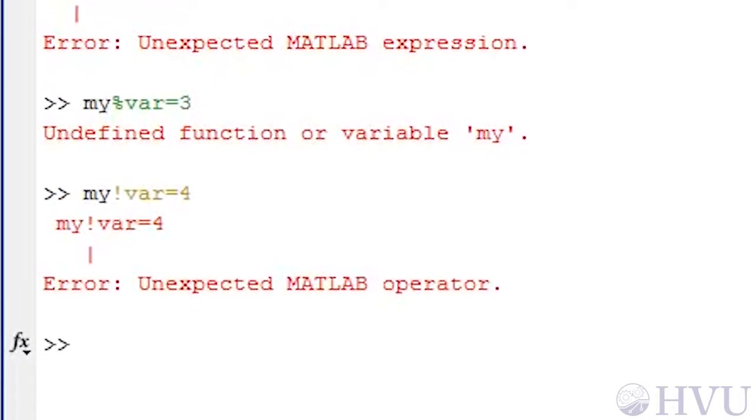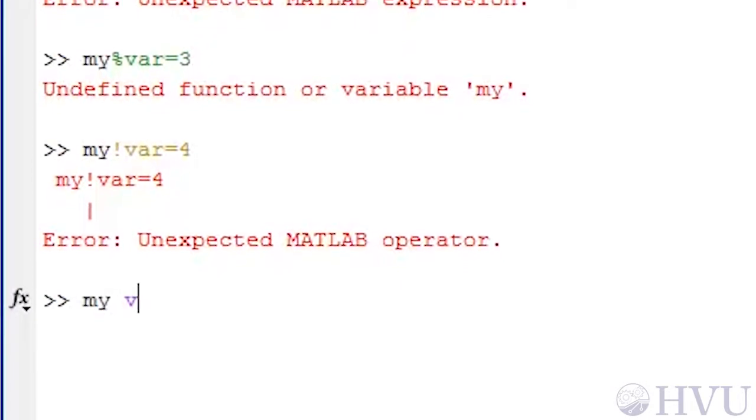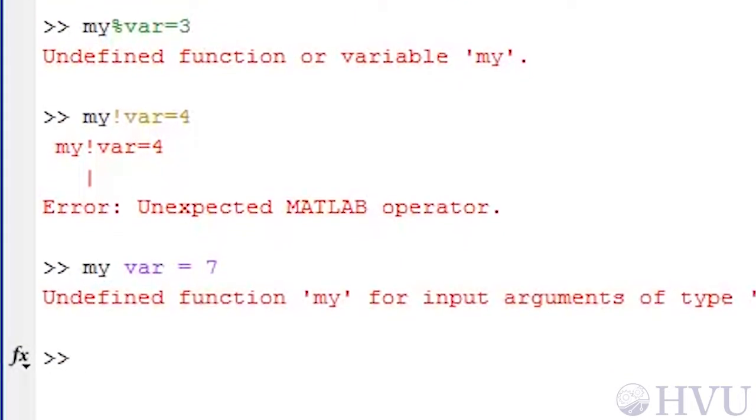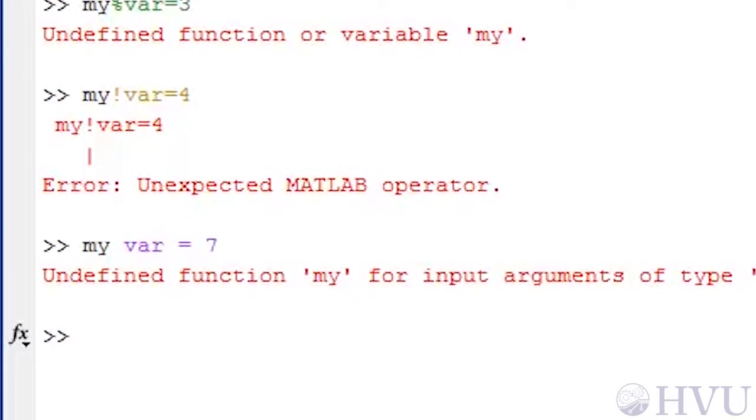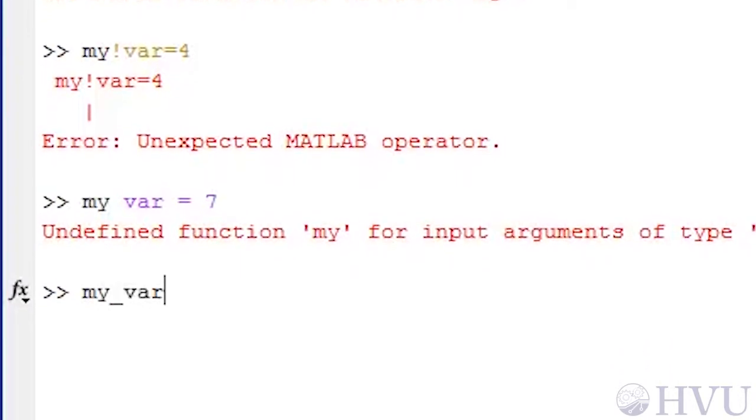We can't use spaces in our variables, so the variable my space var isn't allowed. Usually, if people want something that looks like a space in their variable name, they'll insert an underscore. My underscore var is allowed.